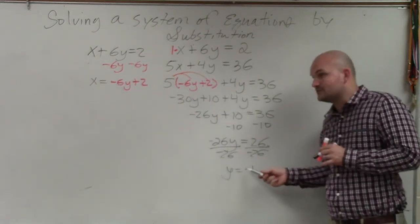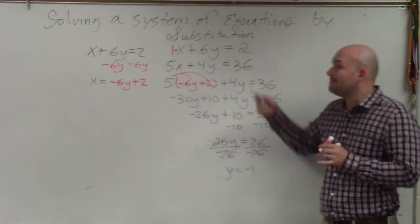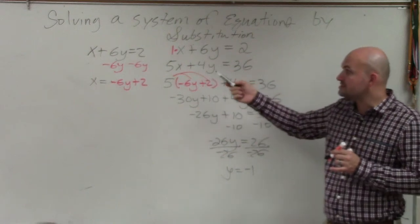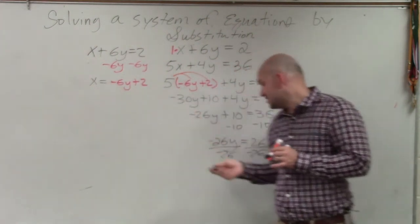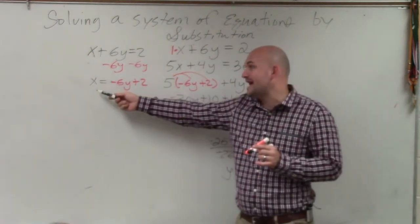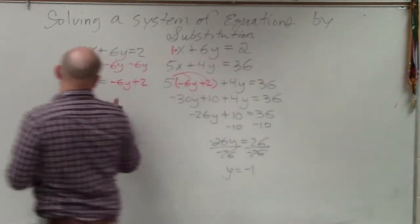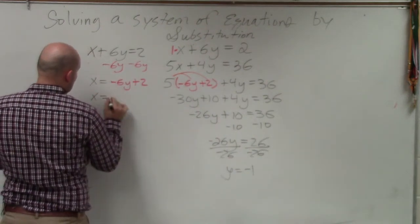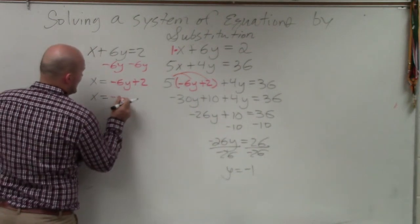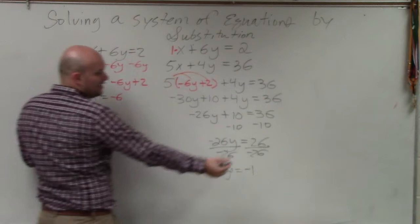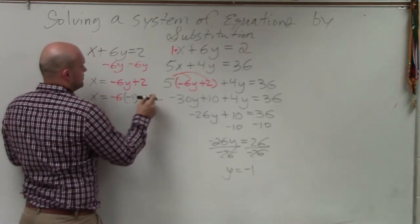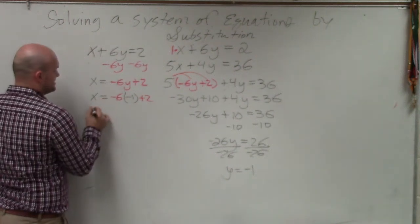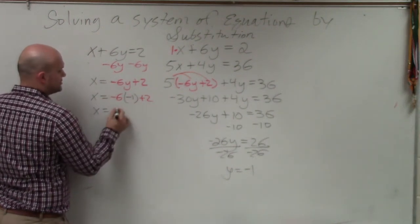So now I know y is equal to negative 1. I'm going to plug it back into one of the original equations. I prefer to plug it into the equation that I have solved for x because I know what y is. The only thing I don't know is what x equals. So I can say x equals negative 6 times y. What is y equal to? Negative 1 plus 2. Negative 6 times negative 1 is positive 6. 6 plus 2 is 8.